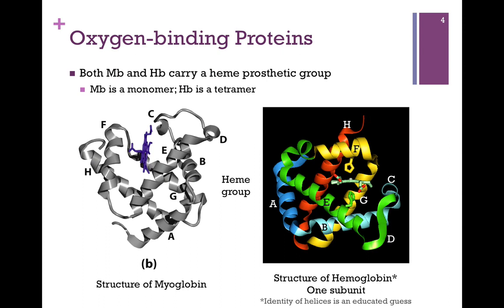Let's look at that oxygen binding core. First, I'd like to focus your attention on the structure of myoglobin — that's our ribbon diagram in gray on the left. Remember, this is a monomer. As you can see, the secondary structure is primarily alpha helical, and the helices are labeled according to their position within the chain. So here's our N terminus, our first helix is A, our second is B, and so forth, until we get to that last H helix, our eighth helix, and there's our C terminus.